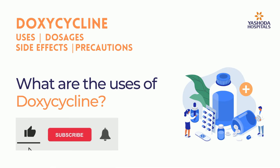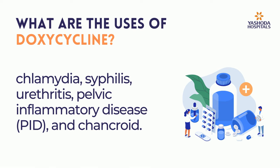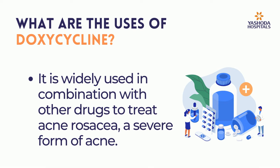What are the uses of doxycycline? It is used to treat urinary and genital infections like chlamydia, syphilis, urethritis, pelvic inflammatory disease (PID), and chancroid.